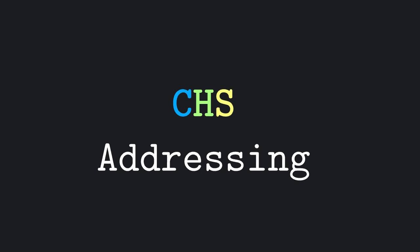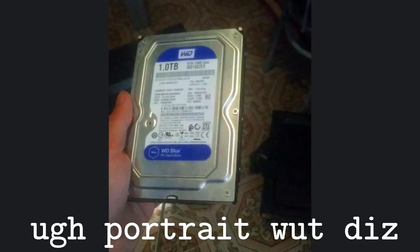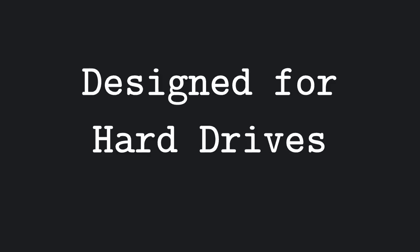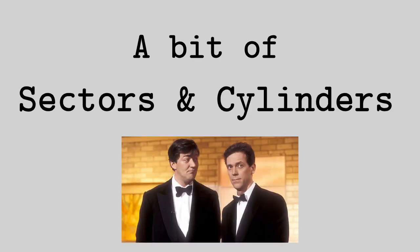Before talking about that, we need to introduce something called CHS addressing. You see, up until relatively recent times, the most common way of storing data was in hard drives, so BIOS uses an addressing that is designed for hard drives. Because of this, before actually talking about how to read from a disk, we're going to need a bit of an intuition of how hard drives work.